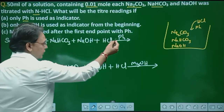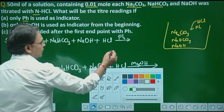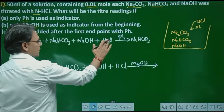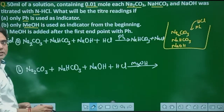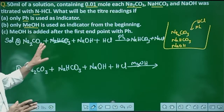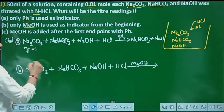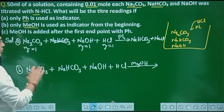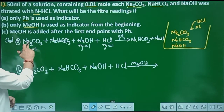For Option A, with phenolphthalein indicator, the conversion of Na₂CO₃ to NaHCO₃ is detected. NaHCO₃ and NaOH react with HCl to form NaCl and H₂O. The NaHCO₃ already present does not react under phenolphthalein conditions — its reaction is not considered here. So the N-factor for Na₂CO₃ is 1, for NaOH is 1. Milliequivalents of Na₂CO₃ plus milliequivalents of NaOH equals milliequivalents of HCl.